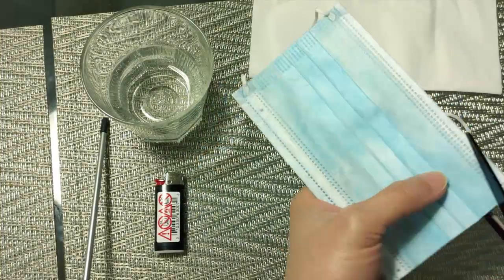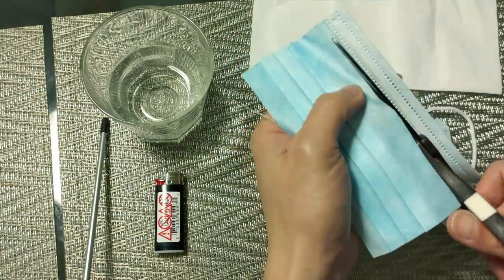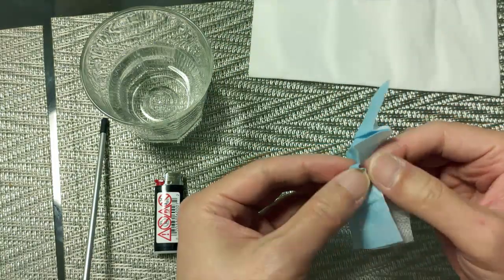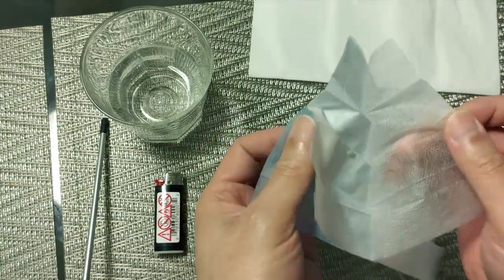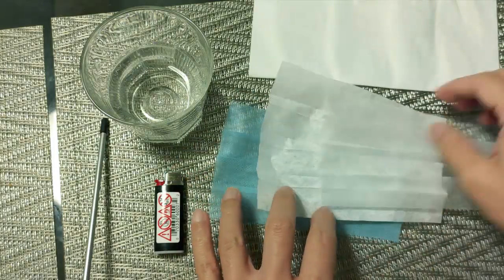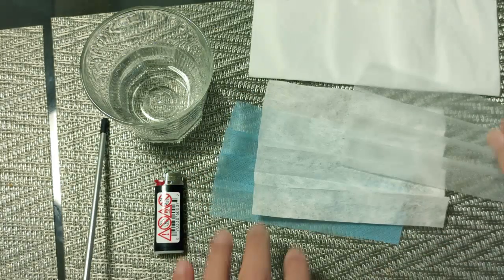We first cut out the rim of the mask and then separate the layers. A surgical mask should have three layers. The outermost layer repels water. The middle layer is a filter and the innermost layer is for absorbing moisture from our mouth.